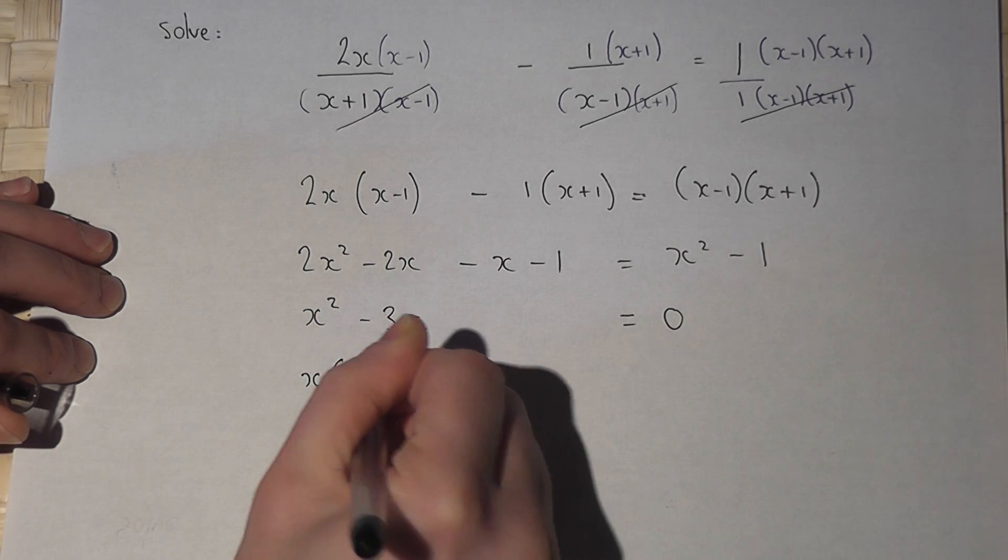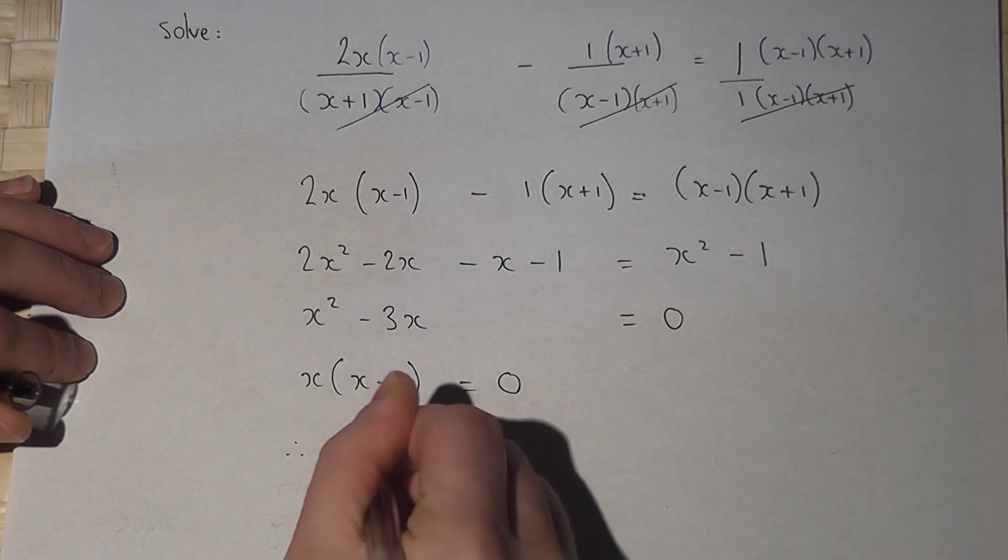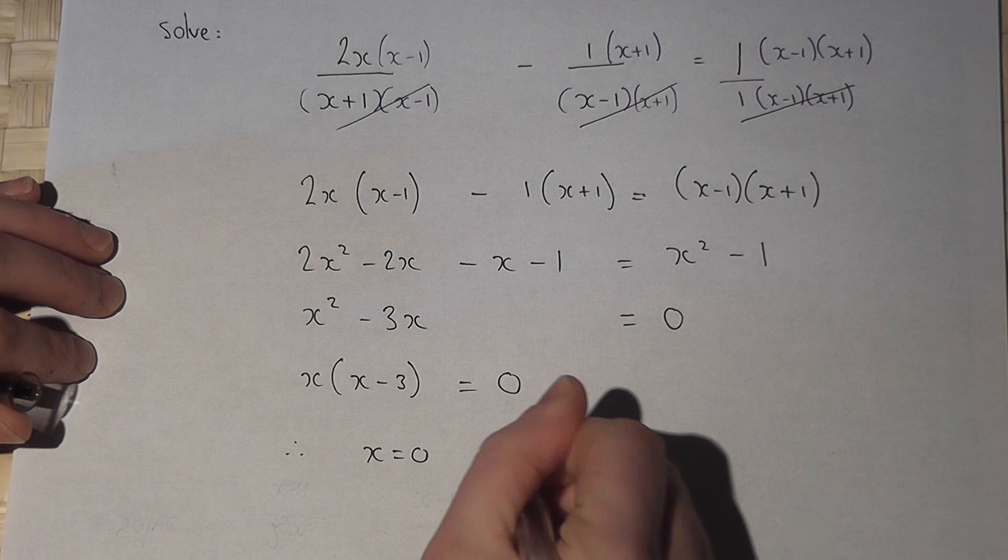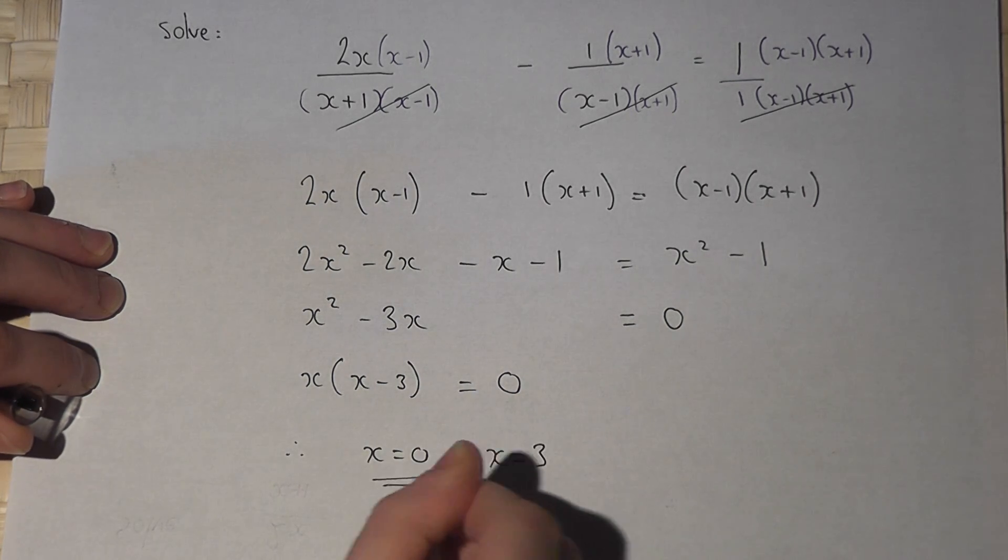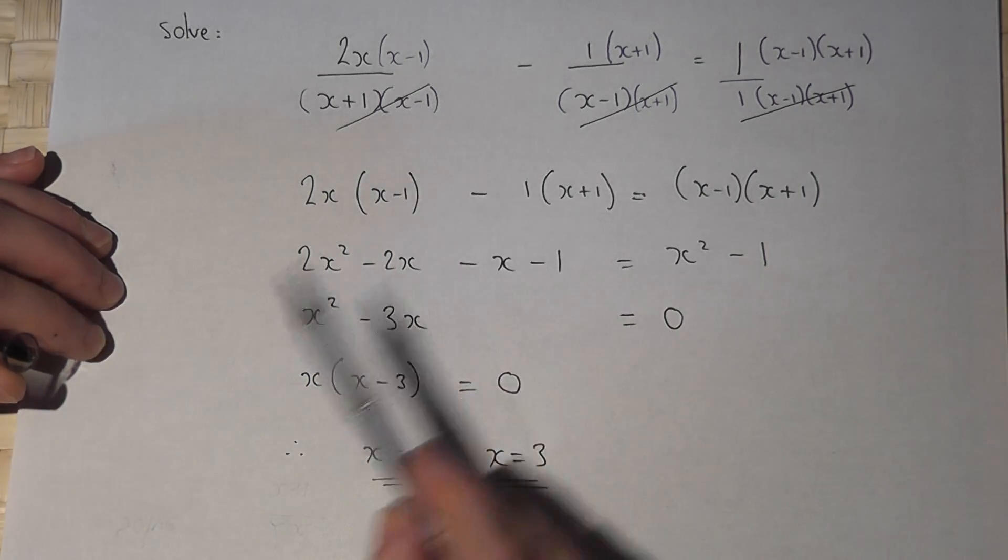This factorizes. So therefore x is either 0 or x equals 3. And they are the two solutions to the equation at the start.